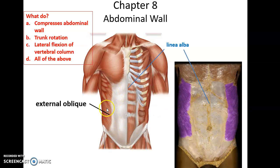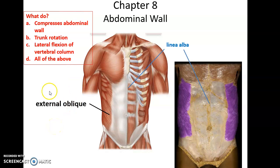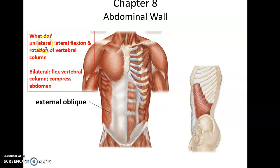External obliques — we have one on each side of the body. They attach to connective tissue that forms the center line of dense connective tissue called linea alba. Unilaterally, if just one external oblique contracts, you get lateral flexion — bending to the side — or rotation of the vertebral column, a twisting of the trunk. If both external obliques contract, you get flexion of the vertebral column for bowing.